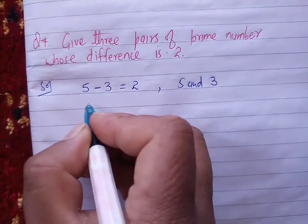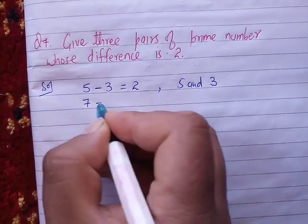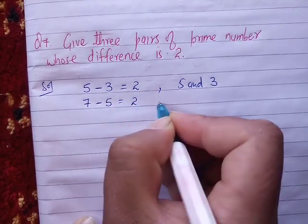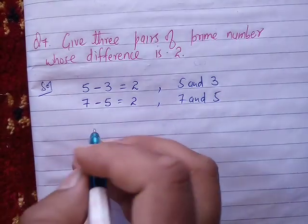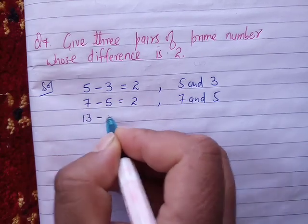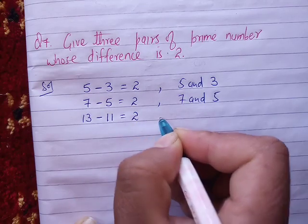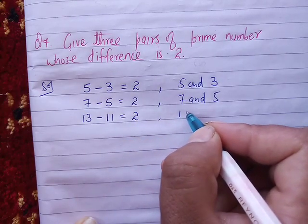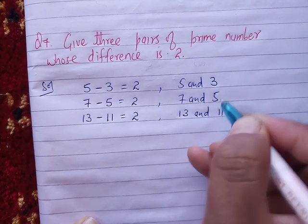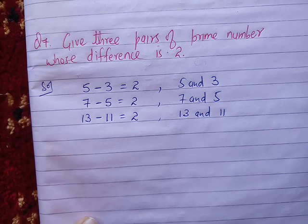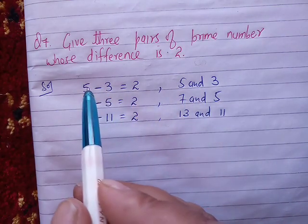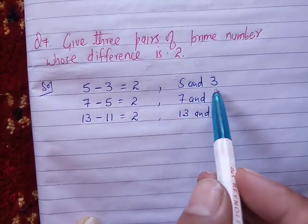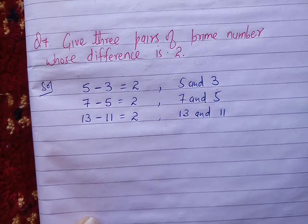The third pair is 13 and 11, because 13 minus 11 equals 2. Both 13 and 11 are prime numbers. So the three pairs are: 5 and 3, 7 and 5, and 13 and 11. These are prime numbers whose difference is 2.